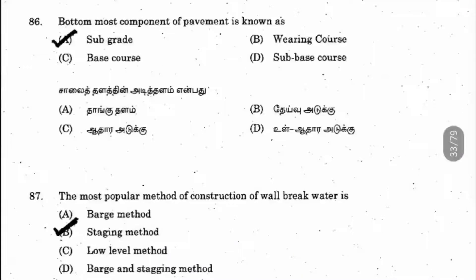Question 86: The bottom-most component of pavement is known as what? The answer is subgrade. Subgrade is at the very bottom; above it is the sub-base course, then the base course, and on top is the wearing course.